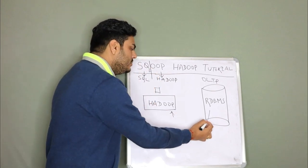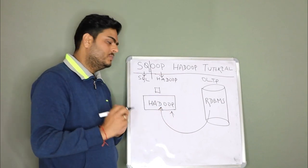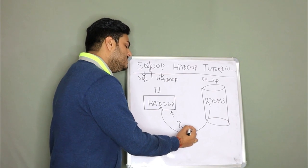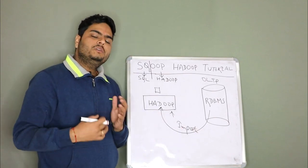So I want to import the data from RDBMS system to Hadoop. How do I do that? This import using this utility there we are speaking Sqoop.